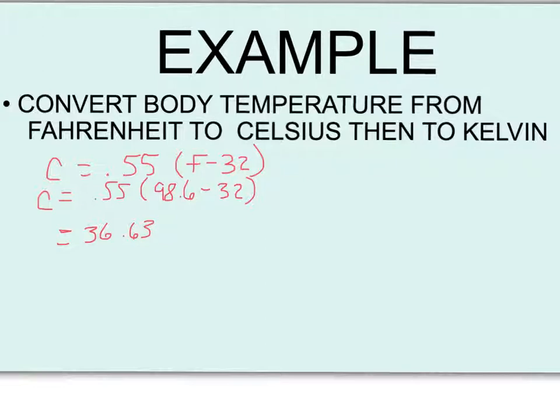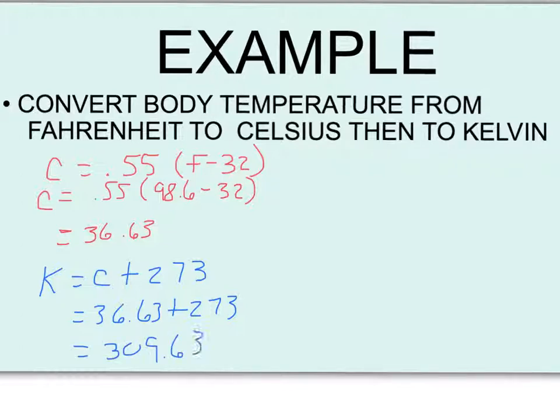Now that we have our Celsius calculated, we can convert to Kelvin. Kelvin equals Celsius plus 273 degrees. So that would be 36.63 plus 273, and we would get an answer of 309.63 Kelvin.